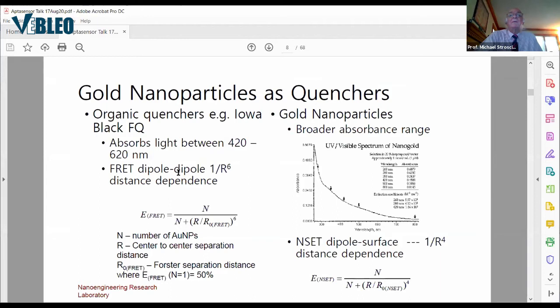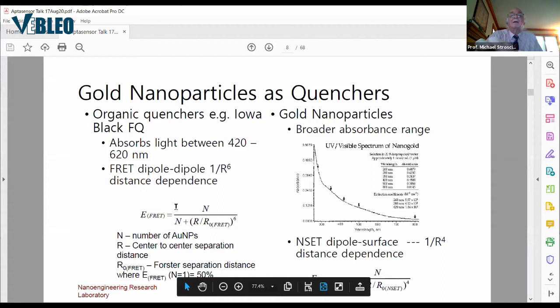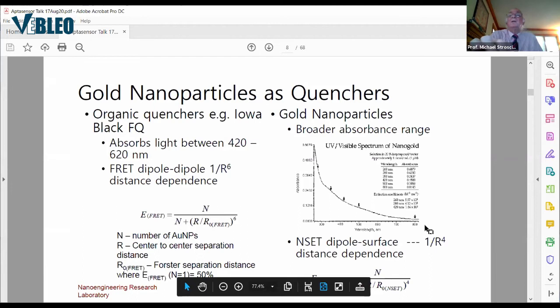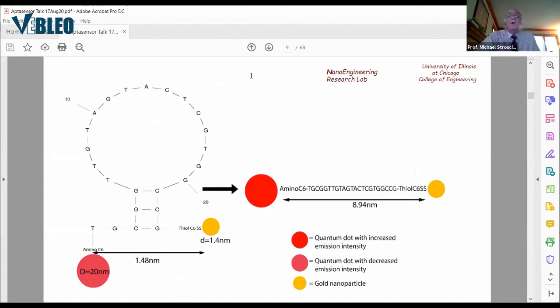I mentioned FRET before. However, the efficiency of the exchange of the light energy to the quencher is known to go like one over r to the sixth. There's a separation where you have a 50% signal that's known as a Forster distance or Forster radius. For the person who pioneered a lot of the work on FRET. If you have a quantum dot near a gold surface, for example, you get a different dependence. It's one over r to the fourth. And we use both. As you can see, there's a very strong dependence. You get a big change in the luminescence depending on conformational change of the quencher.